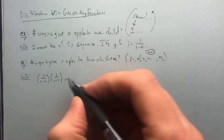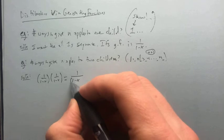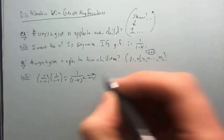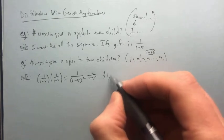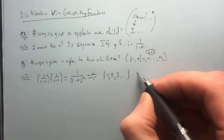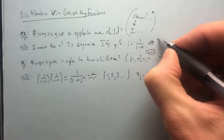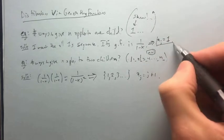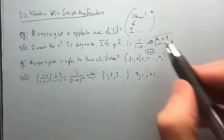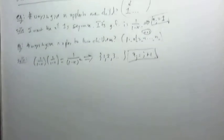So this gives me a generating function of 1/(1-x) squared. We know this leads to the sequence 1, 2, 3, ... or that a_j equals j plus one. So the nth answer is one for the single-child case, and n plus one for the two-child case. All right, let's keep going.